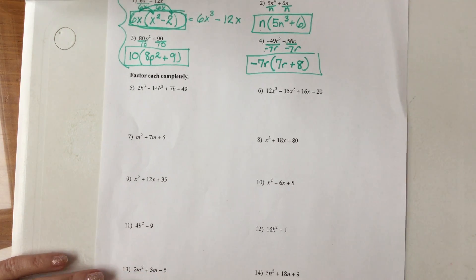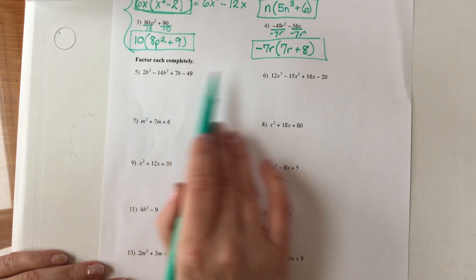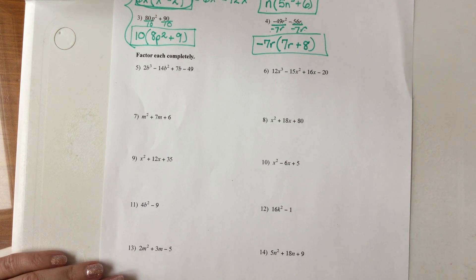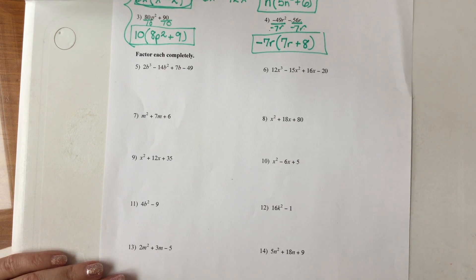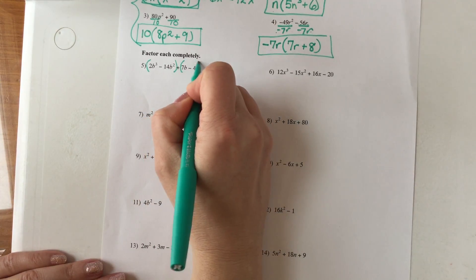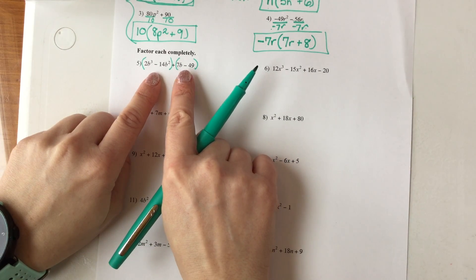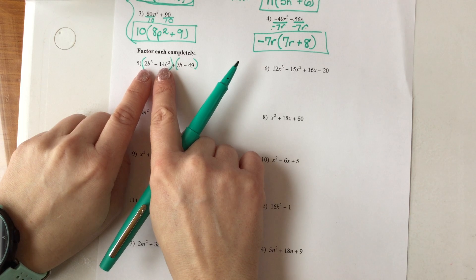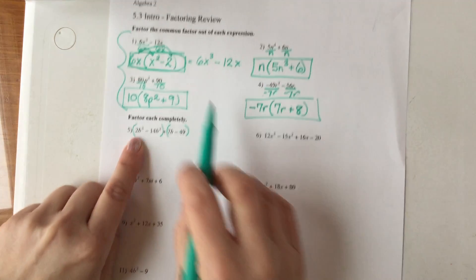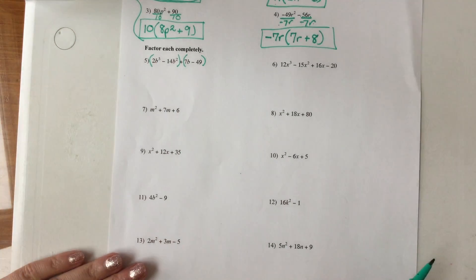Other things when you are factoring: if you are ever asked to factor something that has 4 terms, what you use is called the grouping method. You put parentheses around the first 2 terms and parentheses around the second 2 terms — creating 2 groups. Then you divide out the greatest common factor from each group separately, doing the same idea twice within one problem.